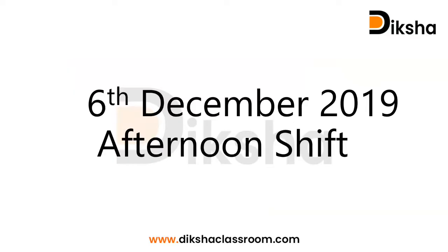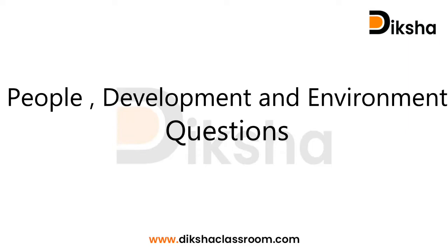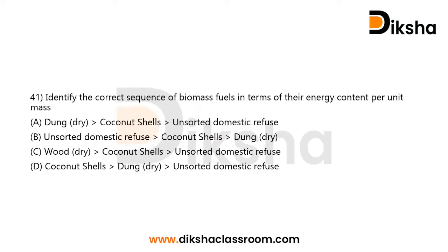We will now directly go to the questions from People, Development and Environment from the 2019 December afternoon shift. The first question: Identify the correct sequence of biomass fuels in terms of the energy content per unit mass. The options are: A — dung, coconut shell, unsorted domestic refuse; B — unsorted domestic refuse, coconut shell, dung; C — dry wood, coconut shell, unsorted domestic refuse; D — coconut shell, dung, unsorted domestic refuse. It's a direct factual question — try to give your answer in the comment section.